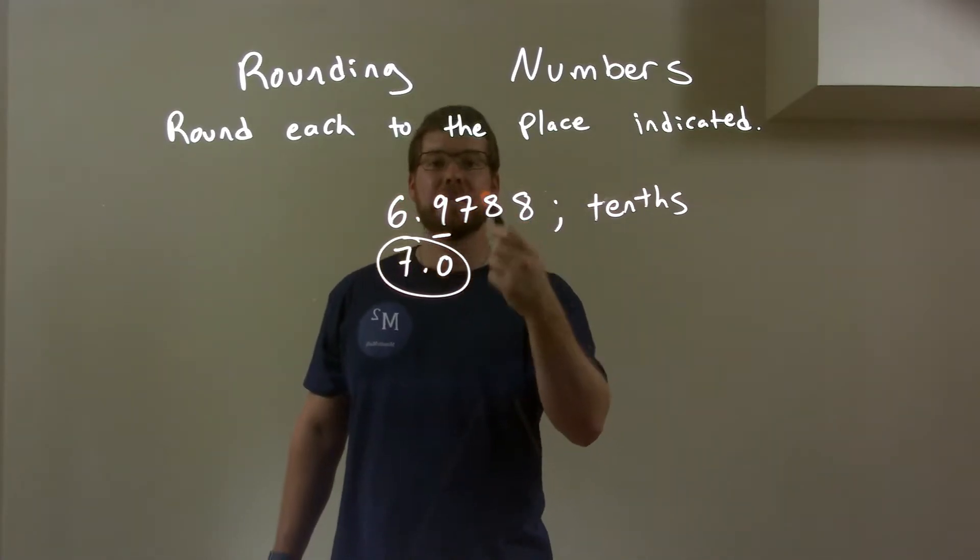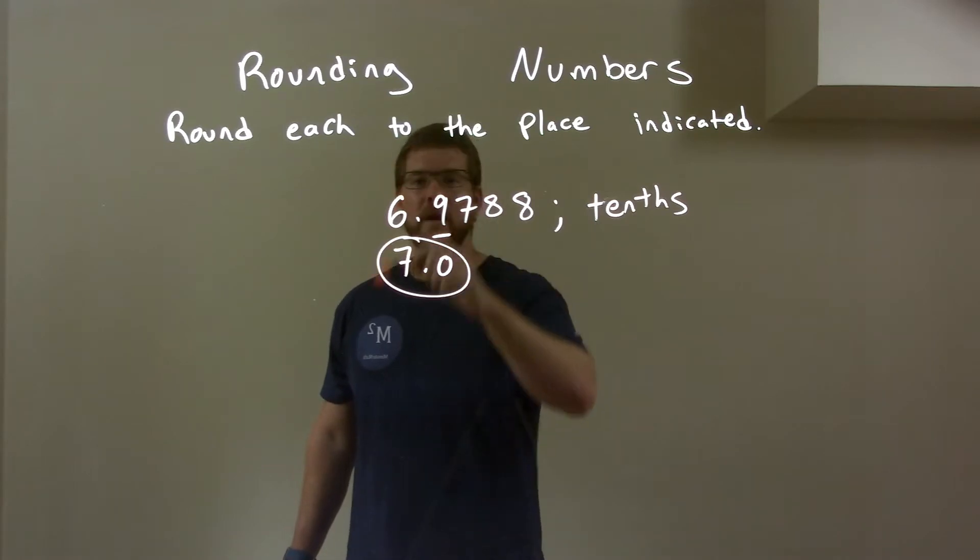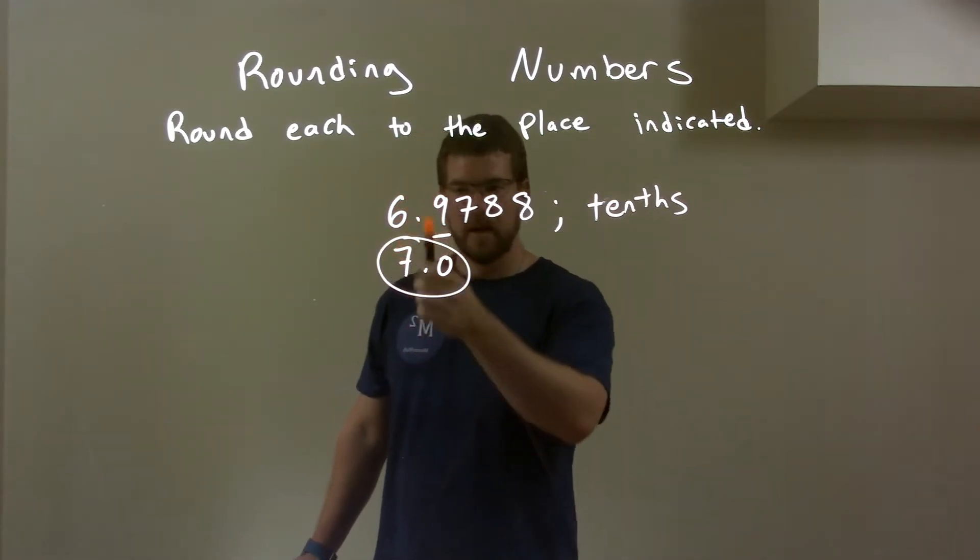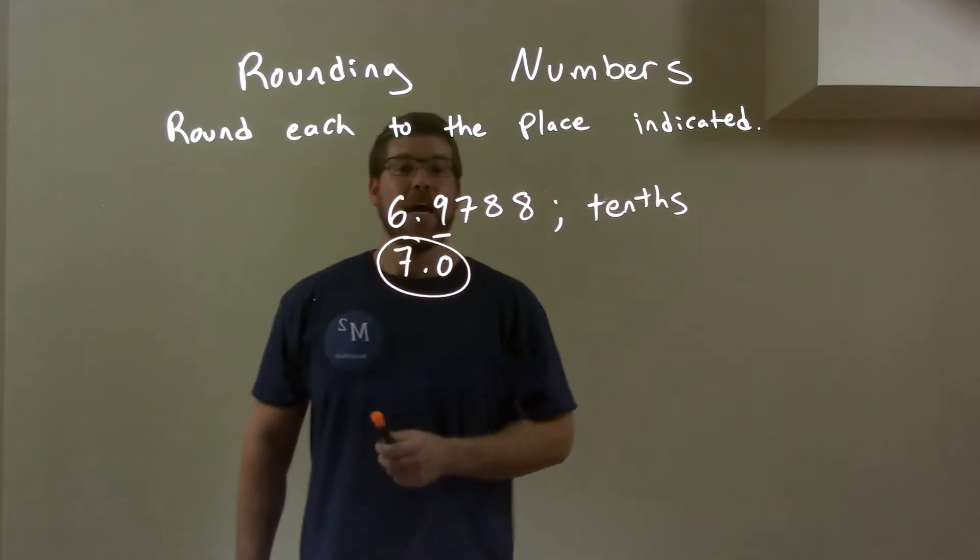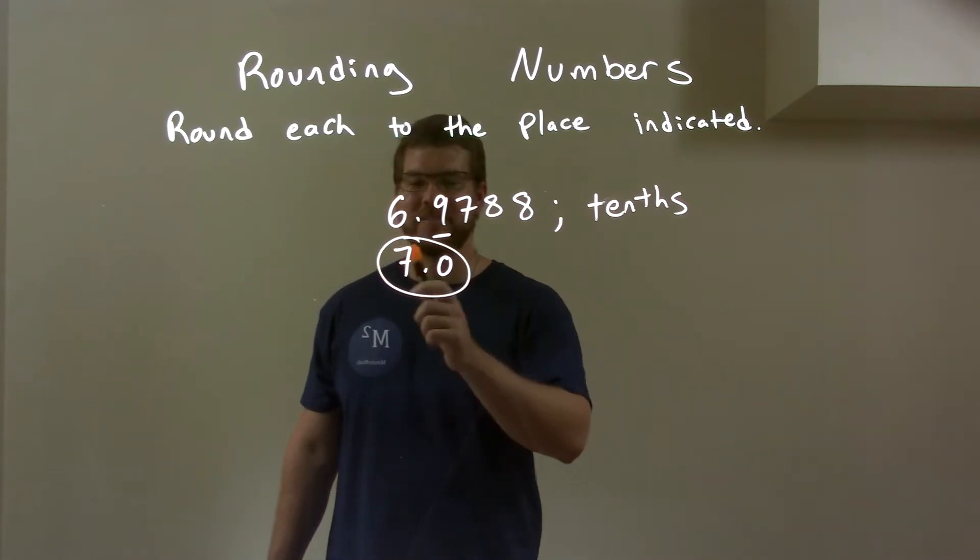Seven causes nine to round up to be a ten. Zero comes here. One gets added to the six which is a seven. Don't forget the decimal point. And we have a rounded final answer of 7.0.